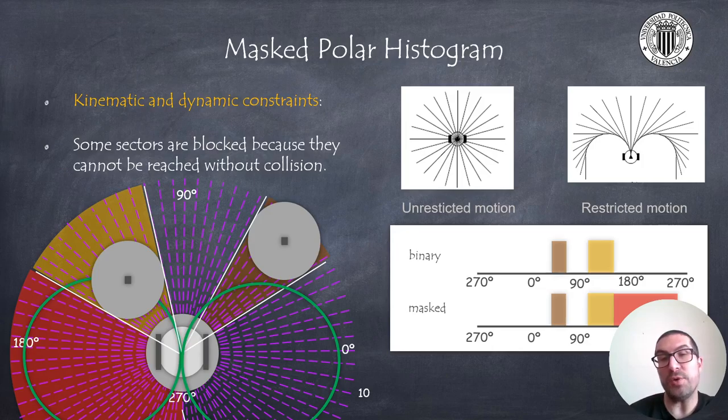And here I show the binary histogram and the masked histograms. And as you can see, the red zone in the masked histogram is marked as forbidden directions, because in order to reach those directions, the robot must necessarily pass through the orange region. And because of the minimum radius, which is depicted in the green circles in the figure, this cannot be possible without colliding.